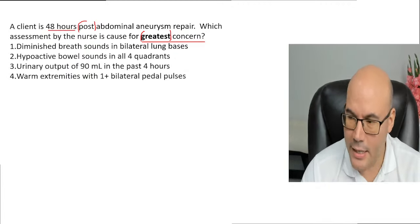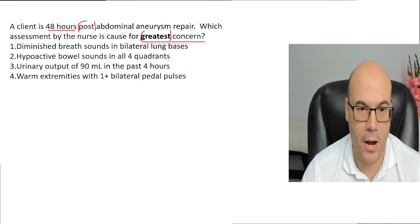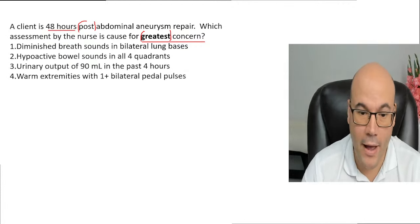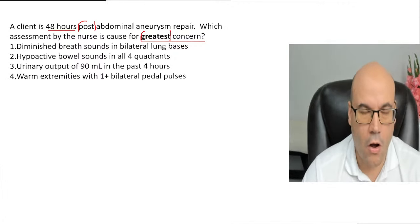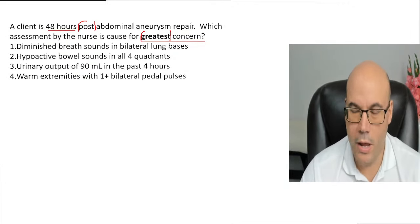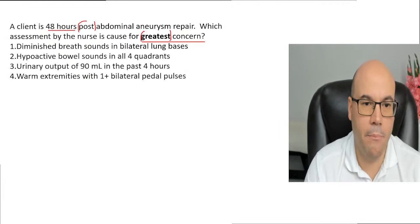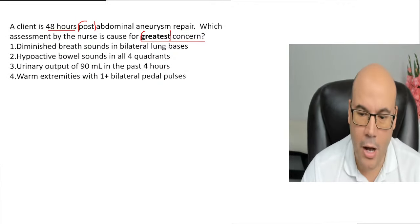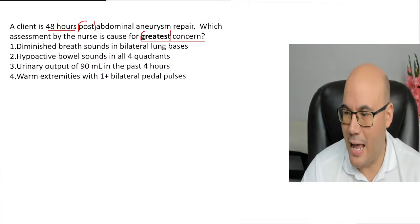To understand this question, we need to know what an abdominal aneurysm repair is. If you recall from yesterday's training, day number five, we talked about the condition of an abdominal aneurysm and the priority when there is a rupture of an abdominal aortic aneurysm. Today, we are talking about the surgical management — an abdominal aortic aneurysm repair.